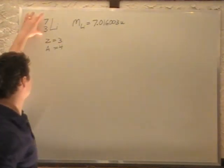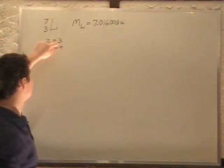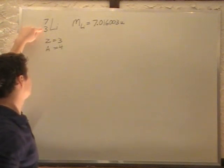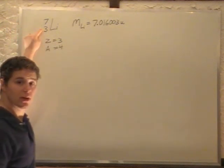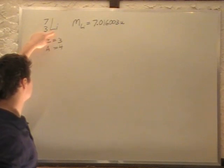Okay, so for 7,3 lithium, we have Z of 3. Z, this number here, is always the number of protons. That's what defines what element this is.